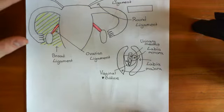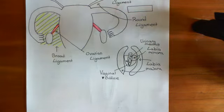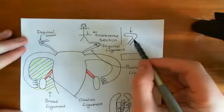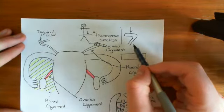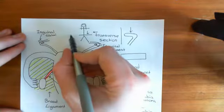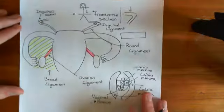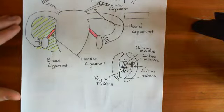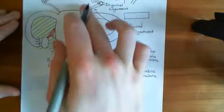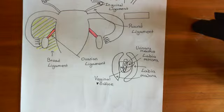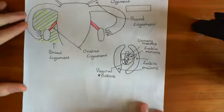For this, we're going to draw another picture. This time we'll be looking at a different angle. We're going to take a sagittal section through the woman and see the uterus, the rectum, and the bladder all in sequence from a side view.